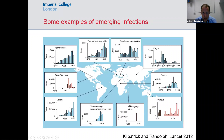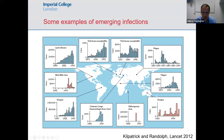Some examples: we might call Lyme disease an emerging infectious disease because its incidence has been increasing over time in the US and indeed in the UK. West Nile was not detected in the US until around 2000 and then emerged there. We might call Dengue an emerging infectious disease because, although it's been prevalent in Southeast Asia for a long time, it's spread and emerged in South America.